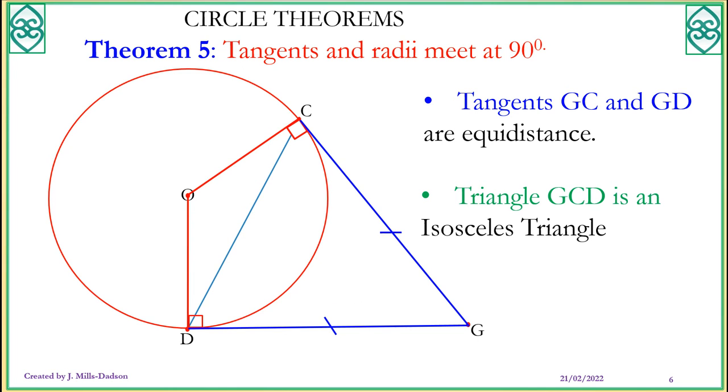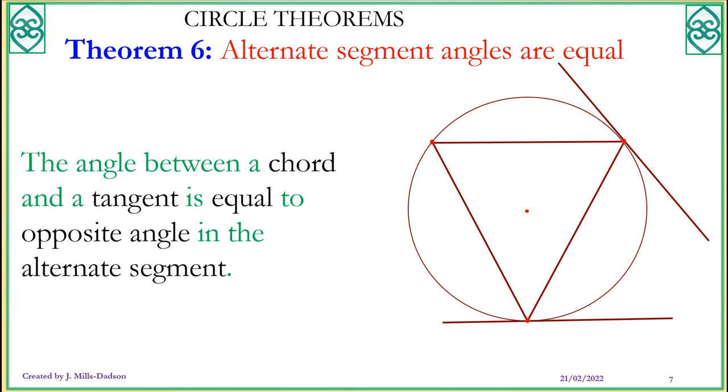So let's get on to theorem 6. Alternate segment angles are equal. What is an alternate segment angles? The angle between a chord and a tangent. So this is a chord and that's a tangent. So the angle between this chord and the tangent is equal to the opposite angle in the alternate segment. You remember that if this is the chord, we have the minor segment and the major segment. So we form an angle here between the chord and the tangent. And given this chord, the only segment left is this section and the only angle left is that angle. So that's what it's talking about, the alternate segment. This X must be equal to this X.